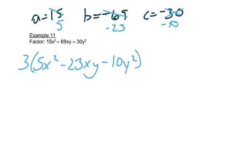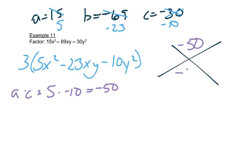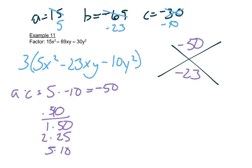Now there's no greatest common factor with those, so we take A times C, which is 5 times negative 10, which is negative 50. We're looking for something that multiplies to get negative 50 and adds to get negative 23. Looking at factors: 1 times 50, 2 times 25, 5 times 10 — others don't work. Since we're multiplying to get a negative and adding to get a negative, the bigger number is negative. So we use 2 and negative 25.